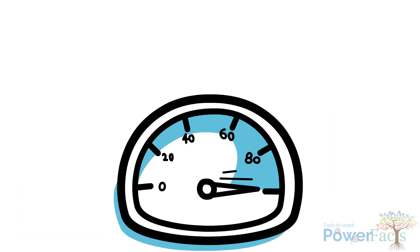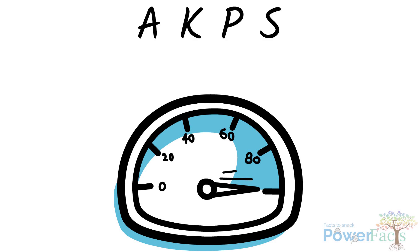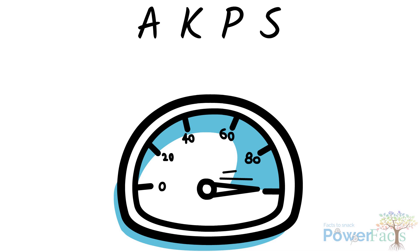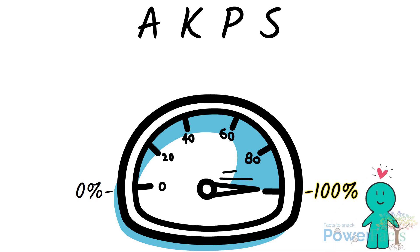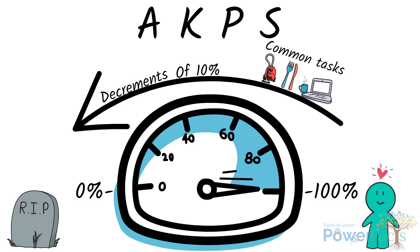Lastly, from our friends in Australia, we have the Australian Karnofsky Performance Scale, also known as AKPS. This is a scale that scores between 0% to 100%, where 100% means the patient has normal physical abilities with no evidence of disease, and 0% means the patient is dead. AKPS is scaled in decrements of 10% and is measured according to a patient's ability to perform common tasks relating to activity, work, and self-care.